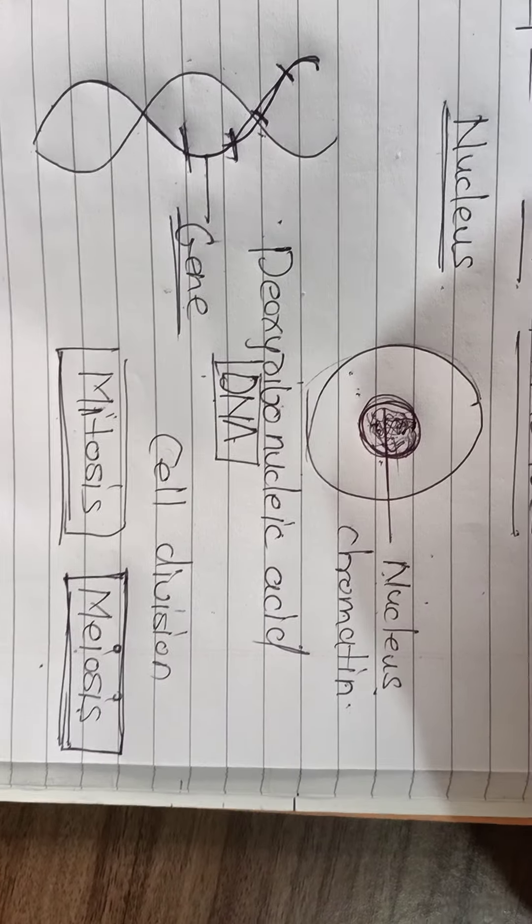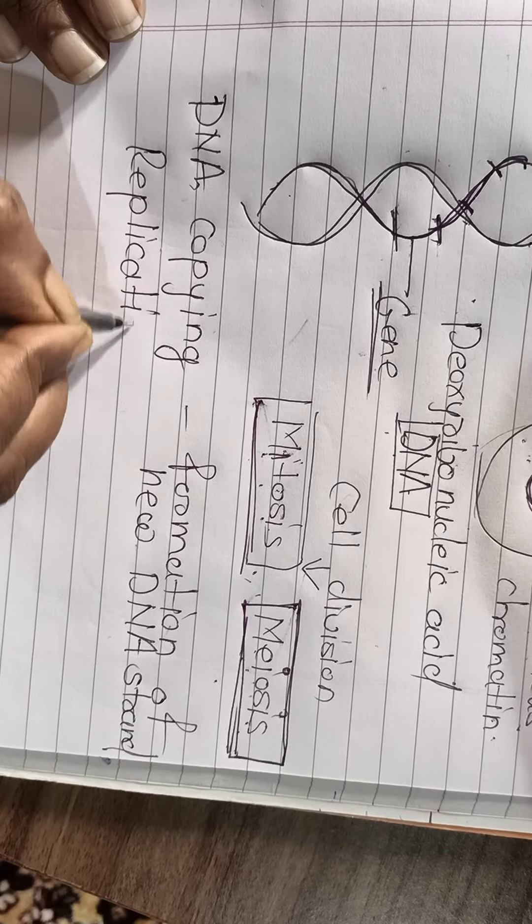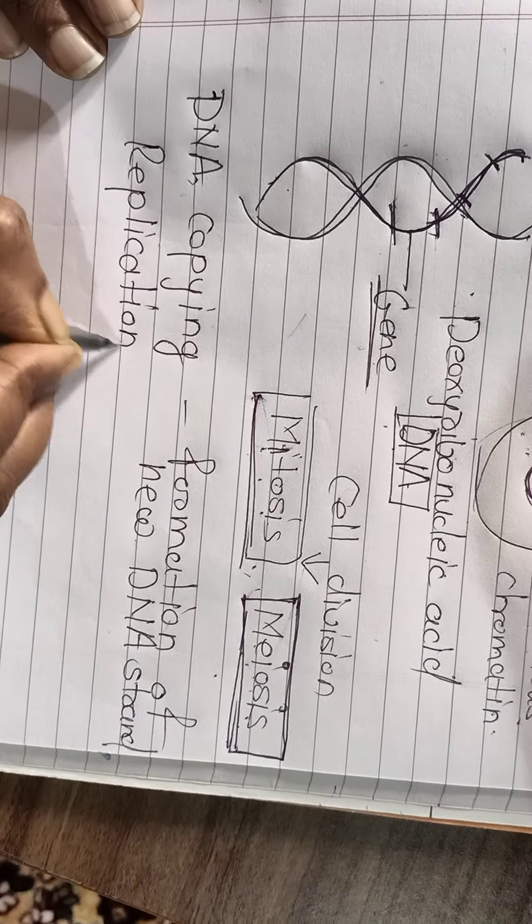In mitosis, cell division takes place for body repair. Whenever we are cut or wounded, we get new skin — our body repairs itself through mitotic cell division. During sexual reproduction, when the nucleus divides to form a new cell, meiosis takes place. It is very important to know both meiosis and mitosis; I can make a separate video if needed.